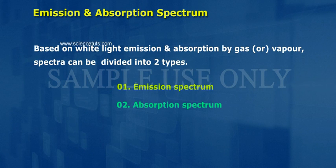Emission and Absorption Spectrum. Based on white light emission and absorption by gas or vapor, spectra can be divided into two types: 1. Emission Spectrum, 2. Absorption Spectrum.